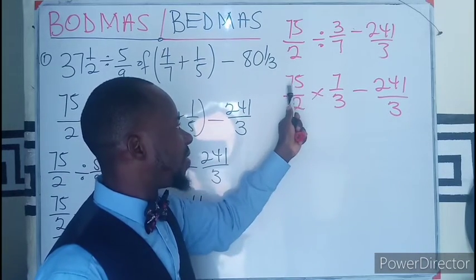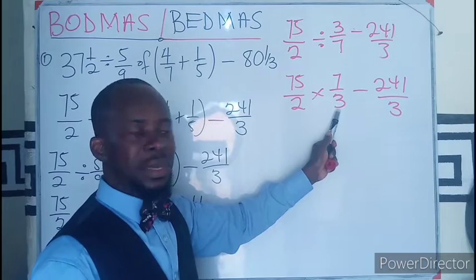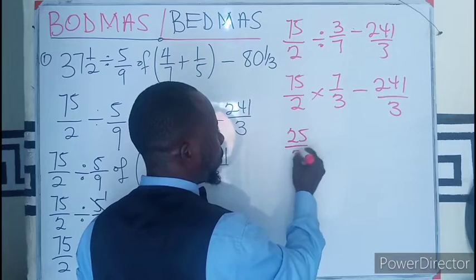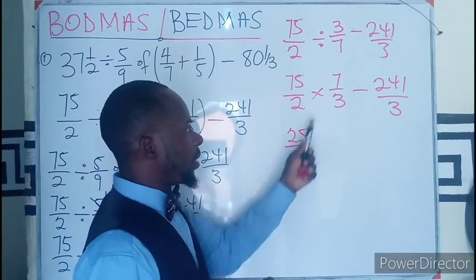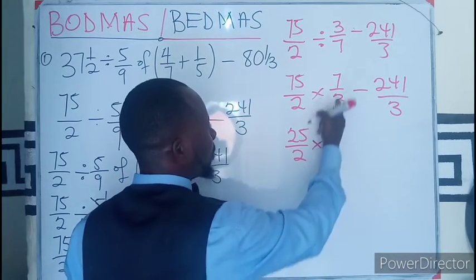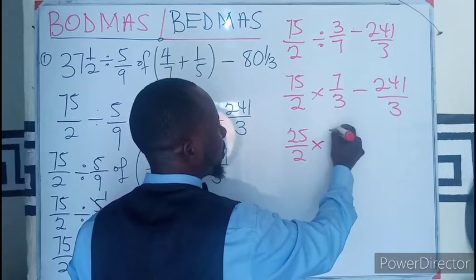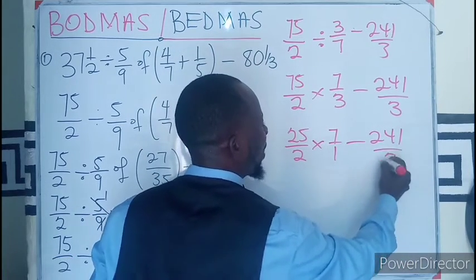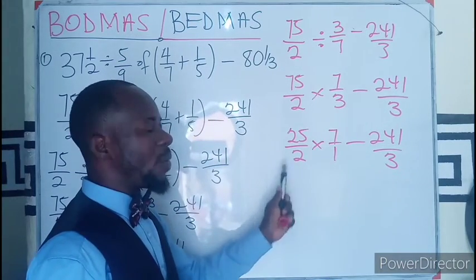I can see 75 divided by 3, so this will go here 1, 25. So I have 25 over 2, then here is going to be times 7 over 1 minus 241 over 3.